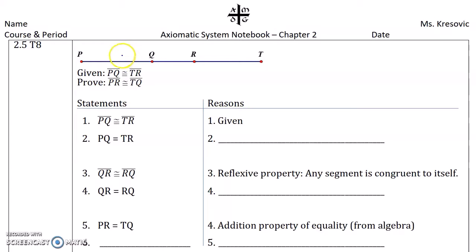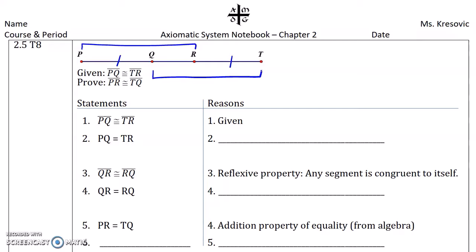Given PQ is congruent to TR, prove that PR is congruent to TQ. So if we are given that the segments are congruent, we know that congruent segments implies equal measure.